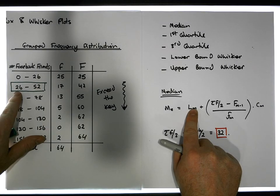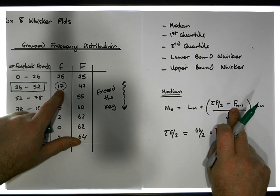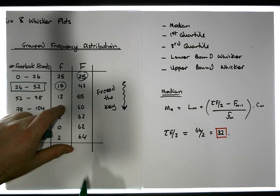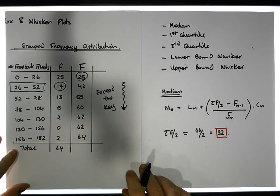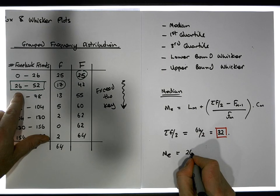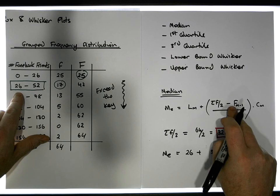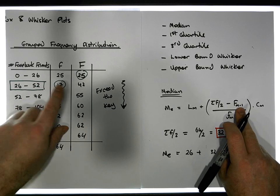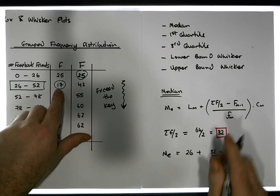L of m is the lower bound, which is 26. Small f of m is the actual frequency of the median class. Capital F of m minus 1 is the cumulative frequency of the class before it, and c of m is the width of the class, which is equal to 26. Our median ME is equal to the lower bound of the class, which is 26, plus σf over 2 which is 32, minus the cumulative frequency of the class before the median class — that's capital F of m minus 1, which is 25 — divided by small f of m, which is 17.